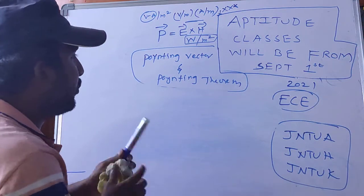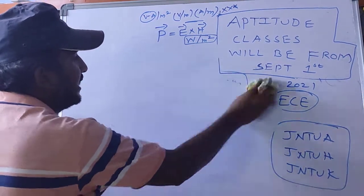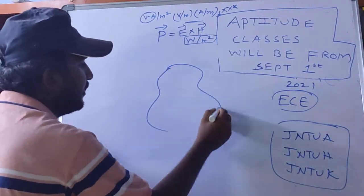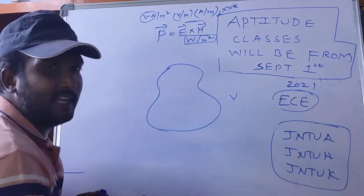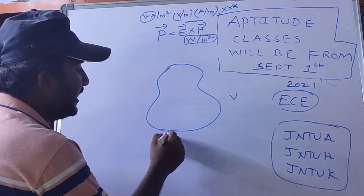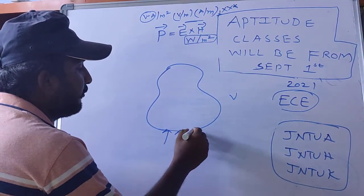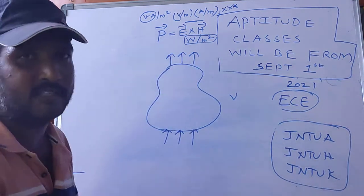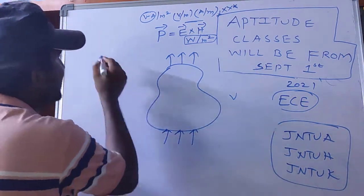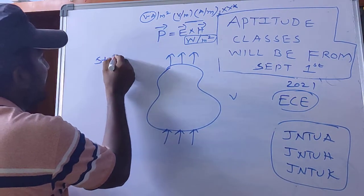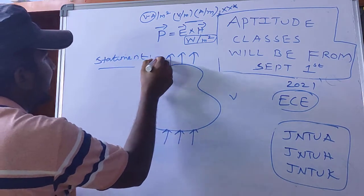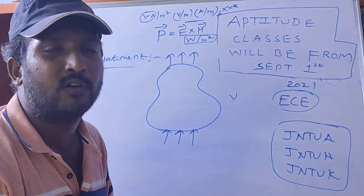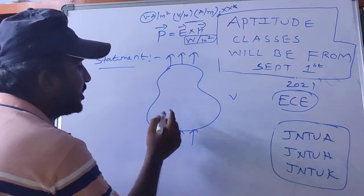Now, what does Poynting theorem state? Consider a volume V. There is power flowing into this volume and a net power flowing out of this volume. According to the Poynting theorem statement, the net power flowing out of a given volume equals...